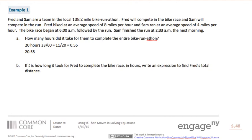If t is how long it took for Fred to complete the bike race in hours, write an expression to find Fred's total distance. So distance is rate times time. And what we'll do is fill in the information that we know. We know that Fred biked at an average speed of 8 miles per hour, and Sam ran at an average speed of 4 miles per hour. And the total time it took them to finish the race is 20.55 hours.